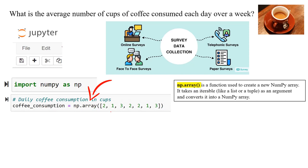np.array is a function used to create a new NumPy array. It takes an iterable like a list or a tuple as an argument and converts it into a NumPy array.